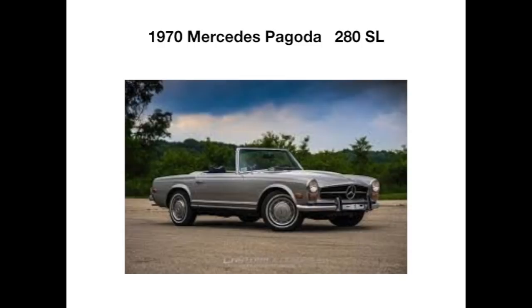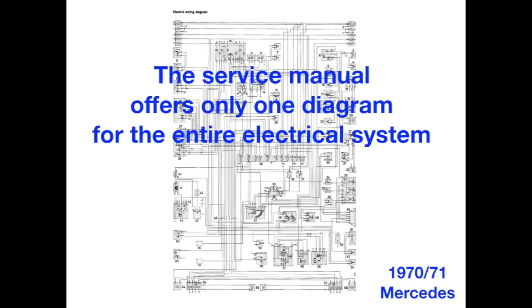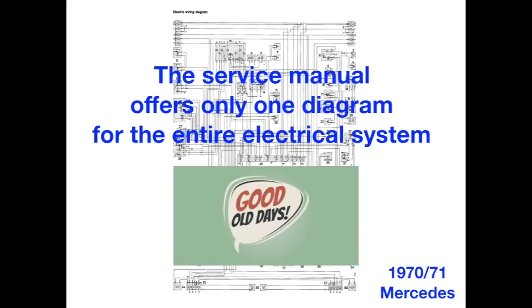We're working on a 1970 Mercedes Pagoda with a 280 SL. Here's the electrical diagram, and his particular question was regarding the emission control system. The service manual only offers one diagram for the entire electrical system. That's the good old days, because back then, one diagram for the whole vehicle. In today's vehicles, you could have pages of diagrams.